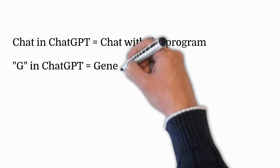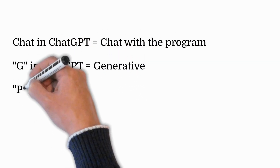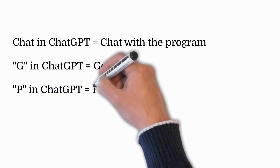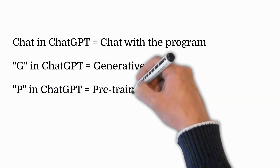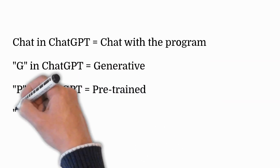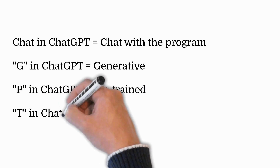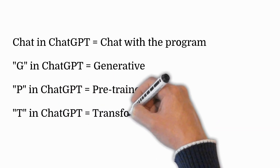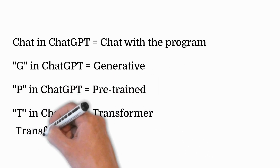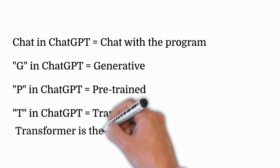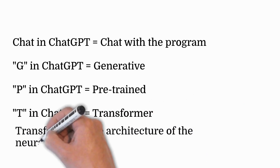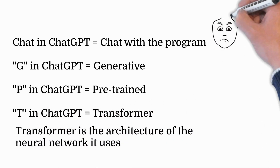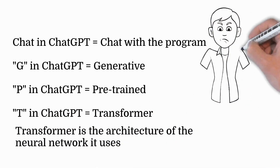The letter P in ChatGPT stands for 'pre-trained.' ChatGPT has been trained on a vast amount of text data before it's fine-tuned for specific tasks. This pre-training allows it to understand language patterns and context. The letter T stands for 'transformer,' which refers to the architecture of the neural network it uses, particularly effective for processing language.